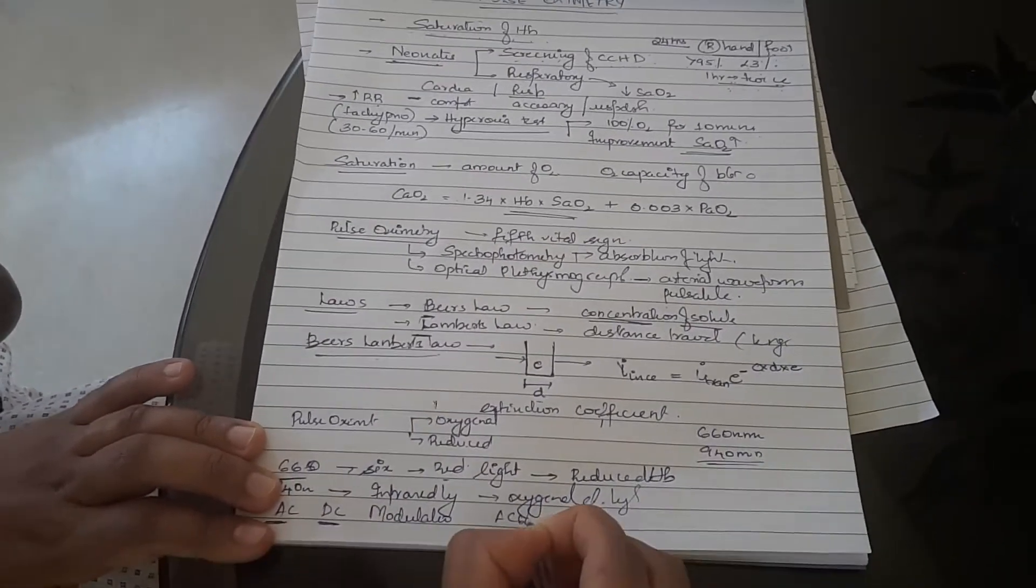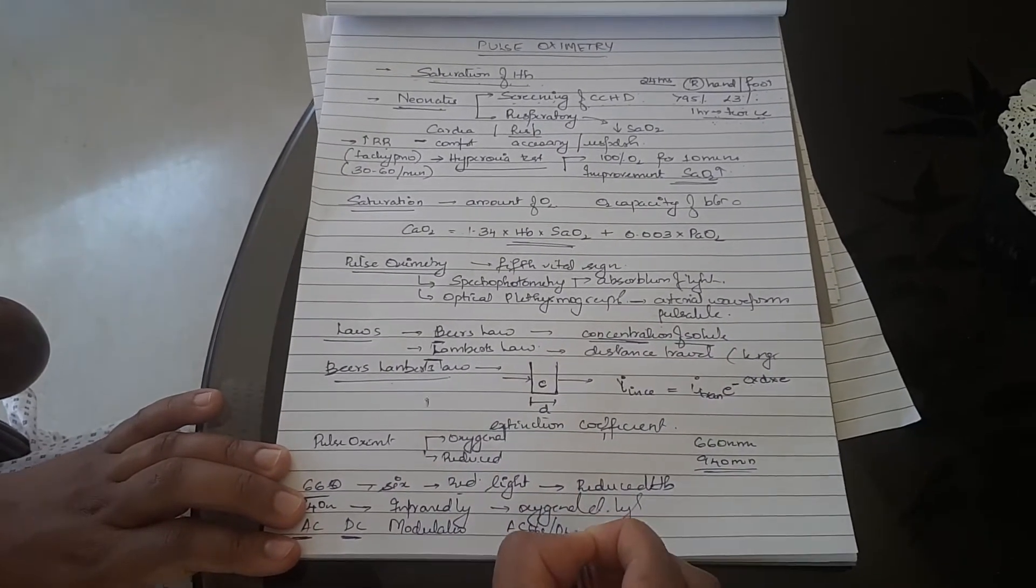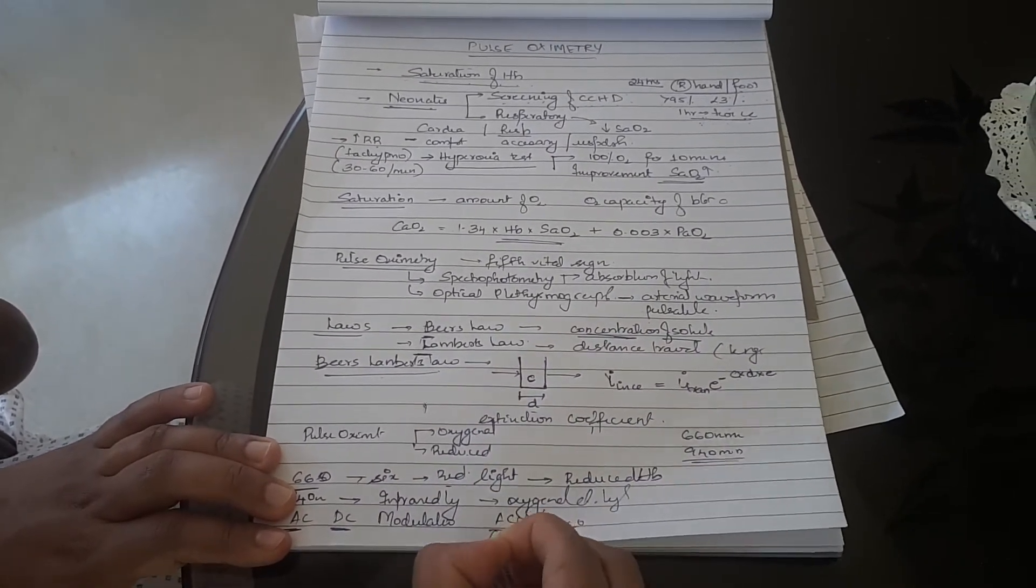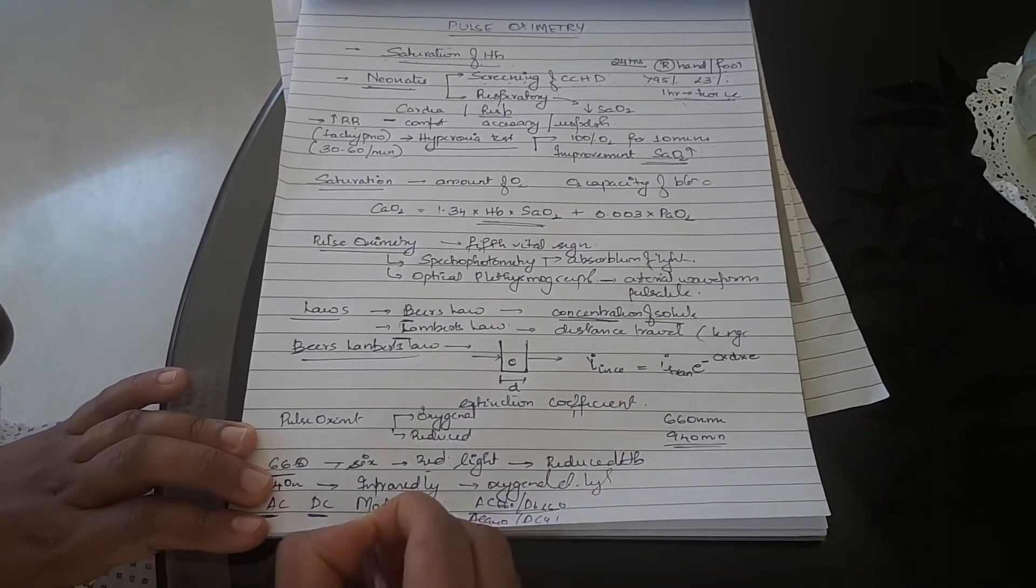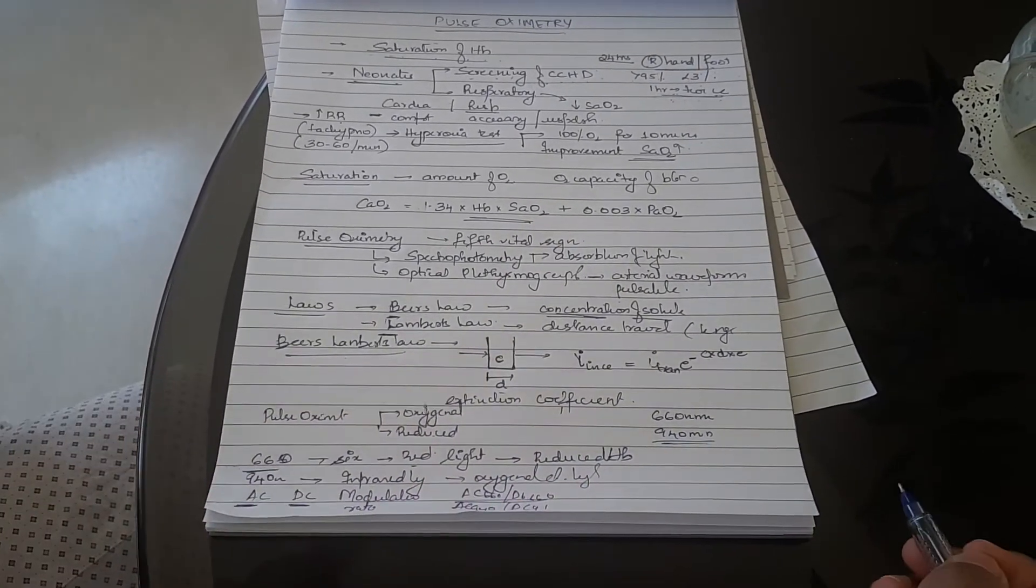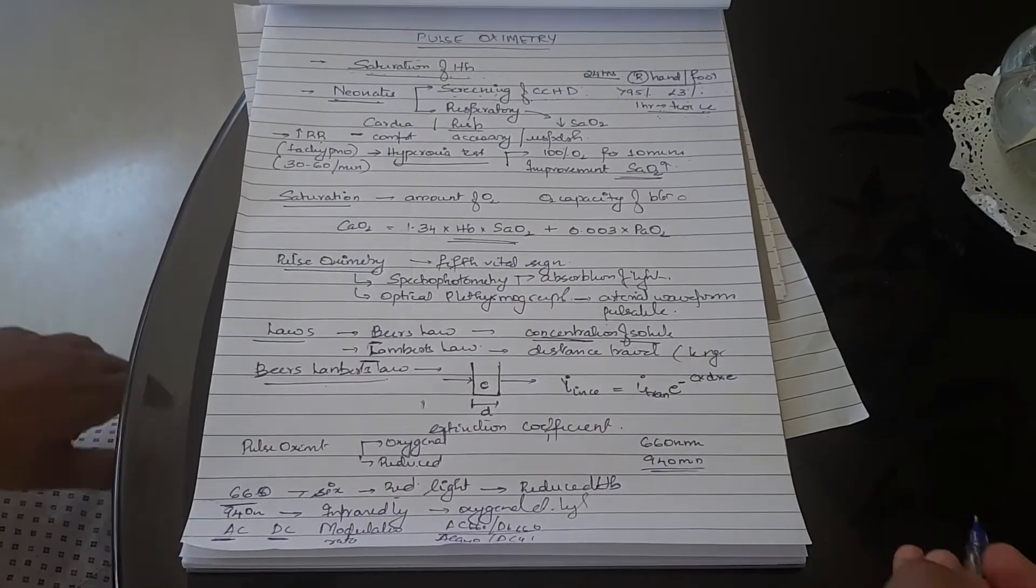That is AC 660 by DC 660. I don't think you need this much for your level because in pediatrics I don't think you need it, but I'm just mentioning. This modulation ratio will then be translated to the amount of saturation.